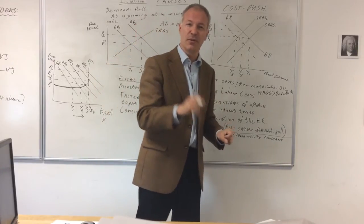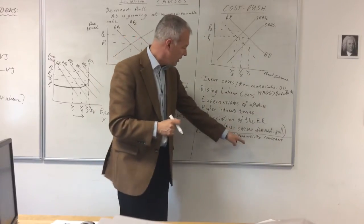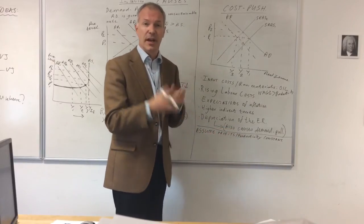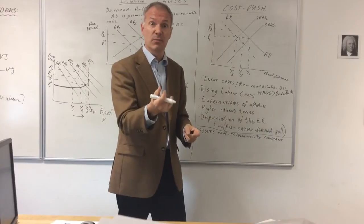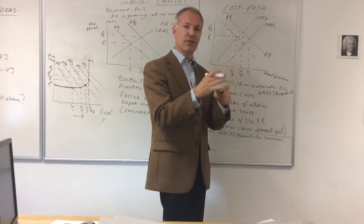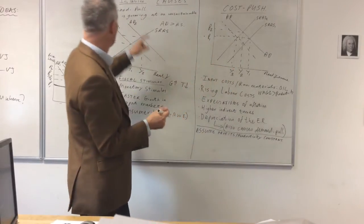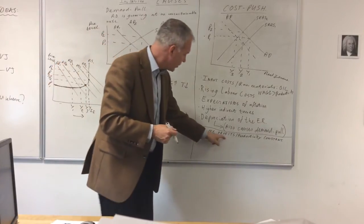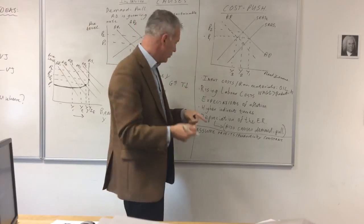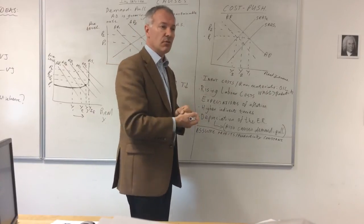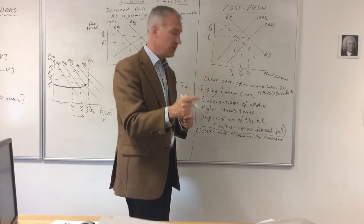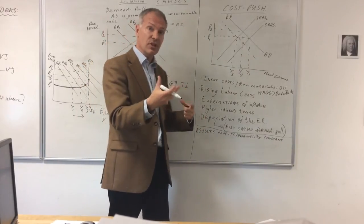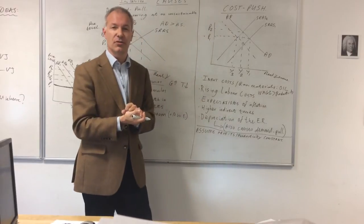But what about demand-pull? Exports will become cheaper because with the depreciation of the pound exports become cheaper. There will be more exports, therefore an export-led multiplier, therefore an increase in aggregate demand. We've got demand-pull inflation as well. A change in the exchange rate can affect inflation. A depreciation will tend to cause both cost-push and demand-pull inflation. If the currency strengthens, an appreciation, that's going to help reduce inflation.